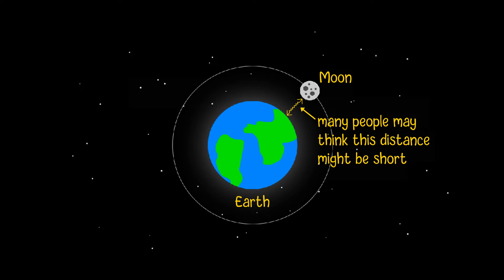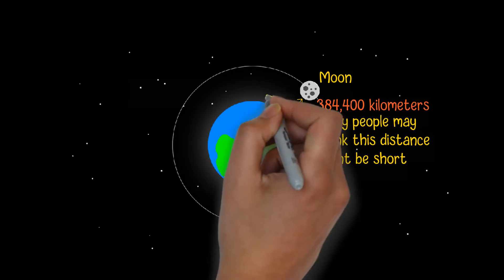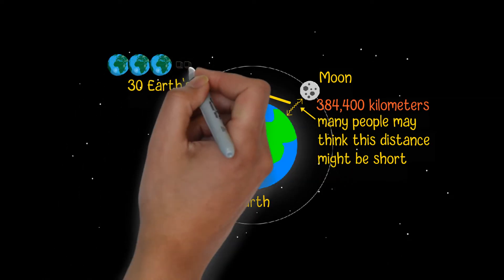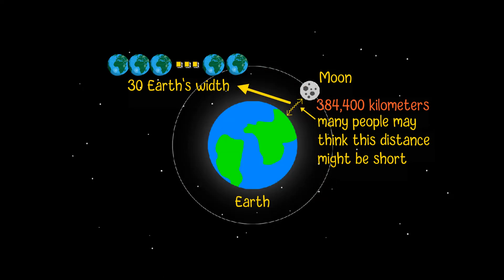Let's consider the average distance from Earth to the Moon, which is about 384,400 kilometers. This distance indicates that 30 planets having the same size as Earth could fit in between Earth and the Moon.